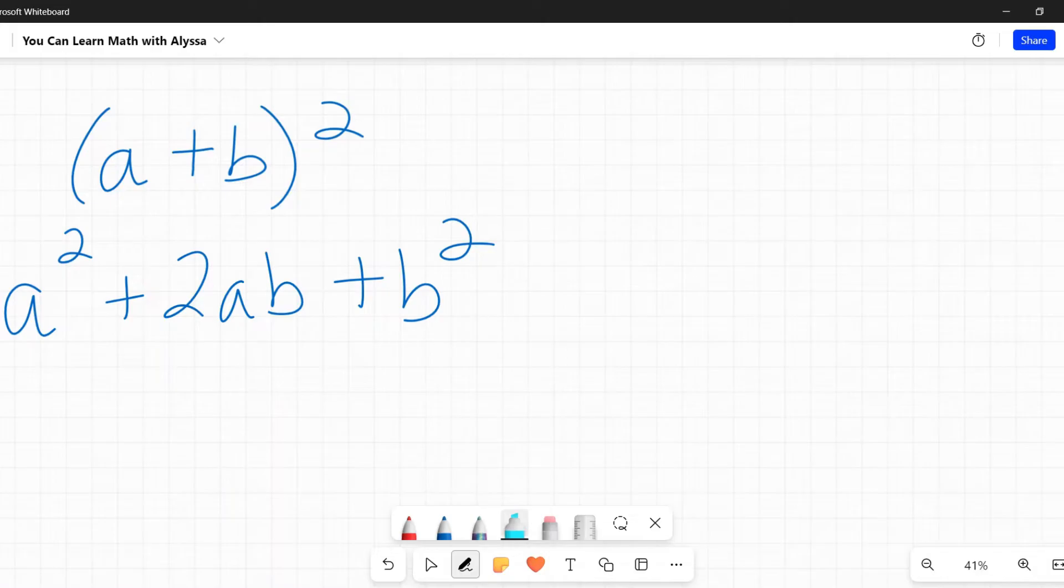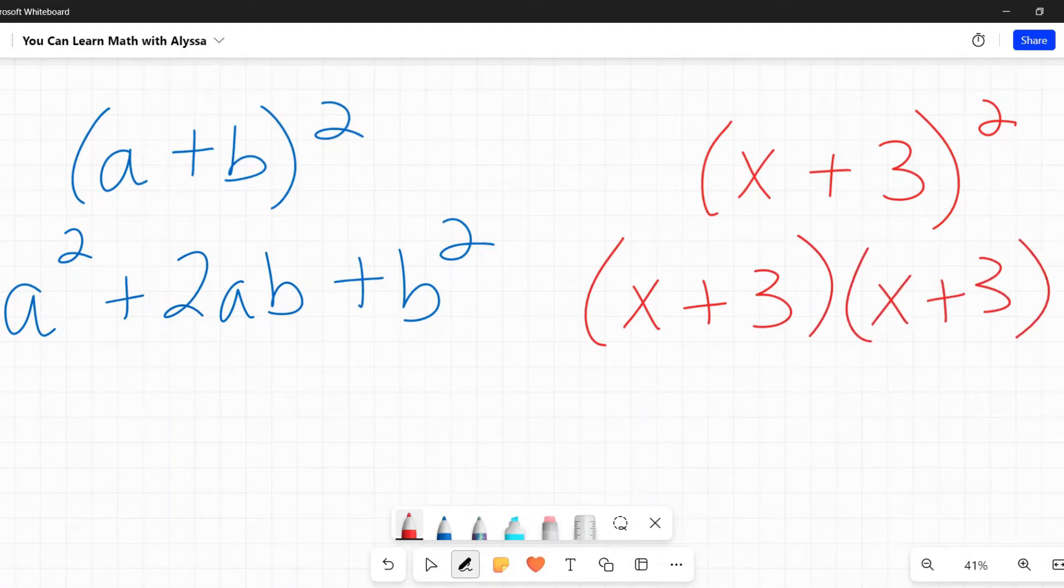So what I'm going to do is put real numbers in this and really show you what's going on. Let's say if I had x plus 3 squared, that is the same as x plus 3 times x plus 3.